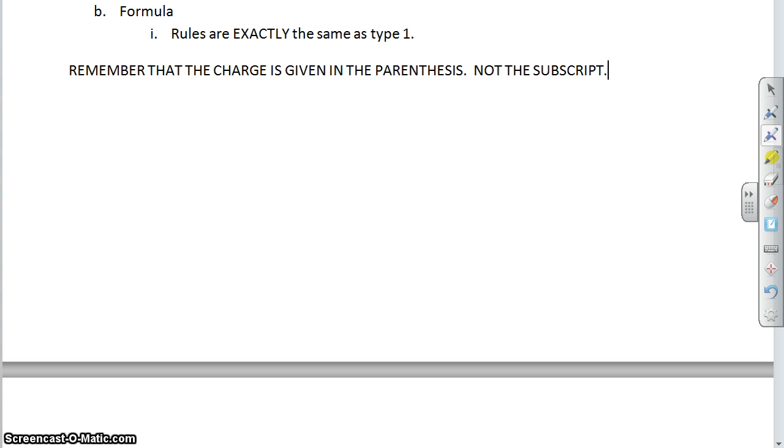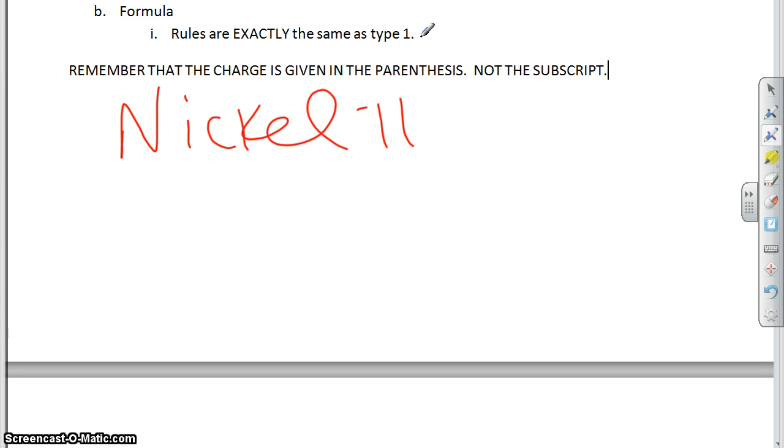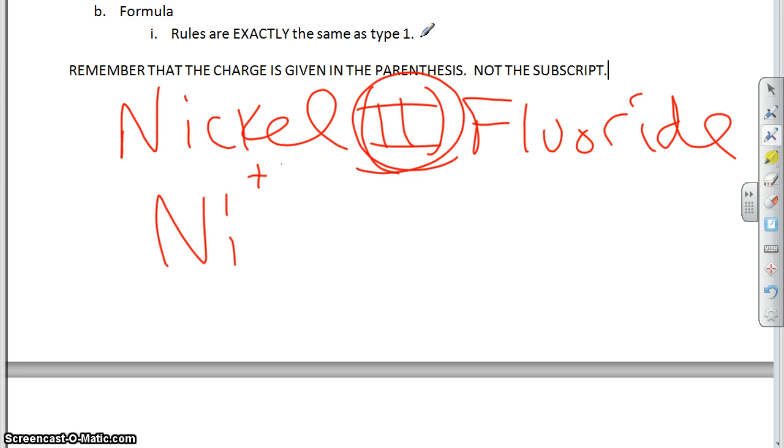Let me show you what I mean. Let's take nickel(II) fluoride. So we start out with nickel. Its symbol is Ni. Its charge is 2, charge is 2. Fluoride is F. Its charge is negative 1. So just like before, we're going to need two of these and one of those. NiF2. Pretty simple.